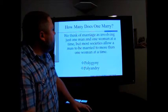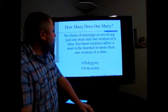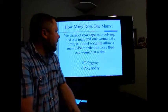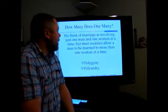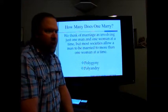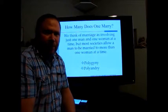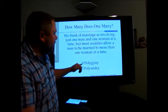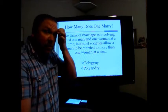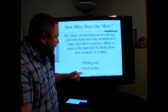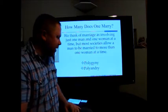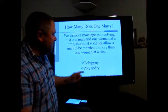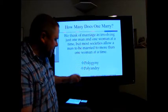We think of marriage as involving just one man and one woman at a time, but some societies allow a man to be married to more than one woman. We call these polygamous groups. Polygyny is where a man can marry more than one woman at a time, and polyandry is where a woman can marry more than one man at a time, and this is less common.